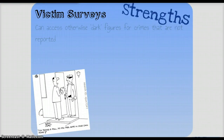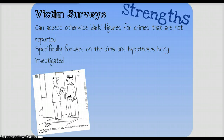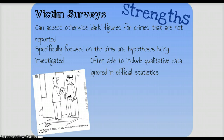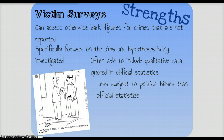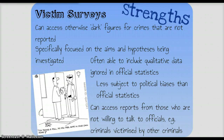Victim surveys then — their strengths. You can access otherwise dark figures for crimes that are not reported. They're specifically focused on the aims and hypotheses being investigated by the theorist. They're often able to include qualitative data ignored by official statistics — the softer, more complex data. They're less subject to political bias, and they can access reports from people who are not willing to talk to officials. For example, criminals who are victimised by other criminals won't go to the police, but they might just talk to a victim survey researcher.